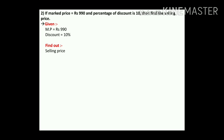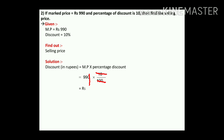Solution: discount in rupees equals percentage discount into MP. That is 10 upon 100 into 990. After cancellation we get rupees 99. So the discount in rupees is 99.